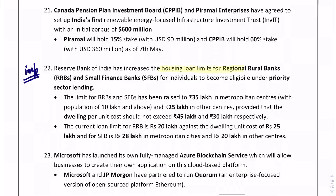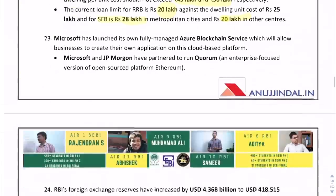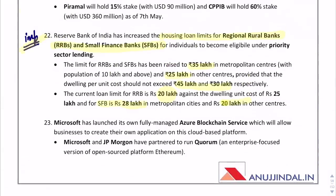Housing loan limits for Regional Rural Banks and Small Finance Banks: they have been raised to ₹35 lakh in metropolitan centers and ₹25 lakh in other centers, provided the dwelling cost does not exceed ₹45 lakh and ₹30 lakh respectively. The current loan limit for RRBs was ₹20 lakh, raised to ₹35 lakh. For SFBs, ₹28 lakh in metropolitan cities against ₹20 lakh in other centers.